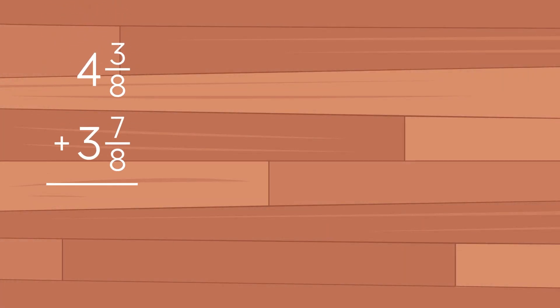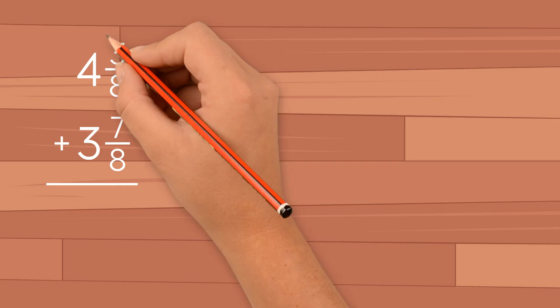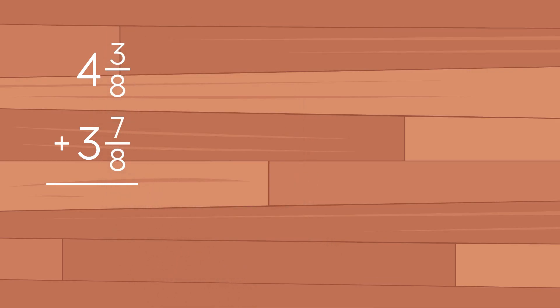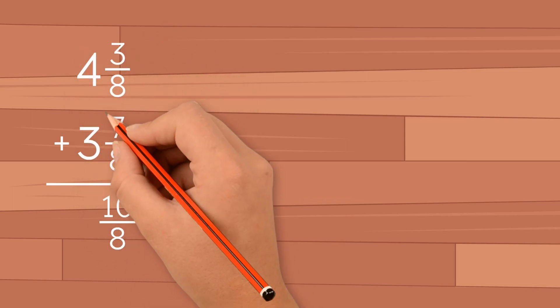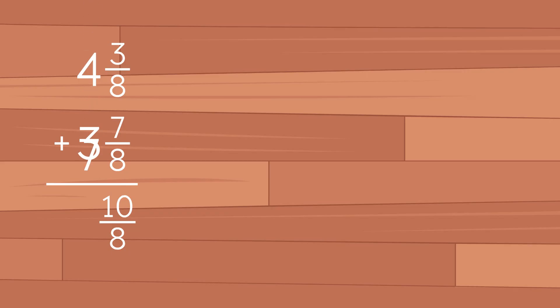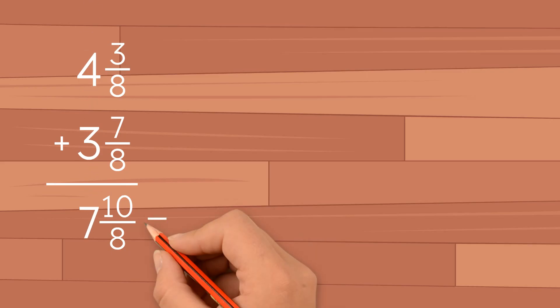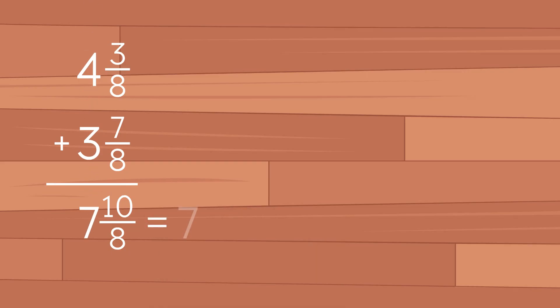Let's do another example: 4 and 3 eighths plus 3 and 7 eighths. First we add the fractional part. 3 eighths plus 7 eighths gives us 10 eighths. Now we add the whole numbers. 4 plus 3 gives us 7. We can rewrite 7 and 10 eighths as 7 plus 10 eighths.